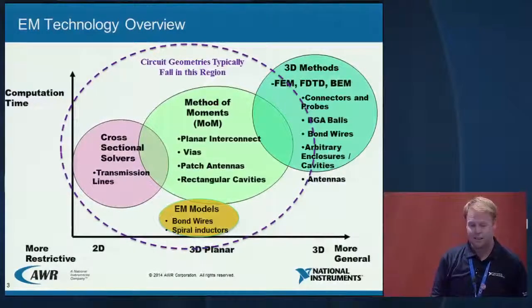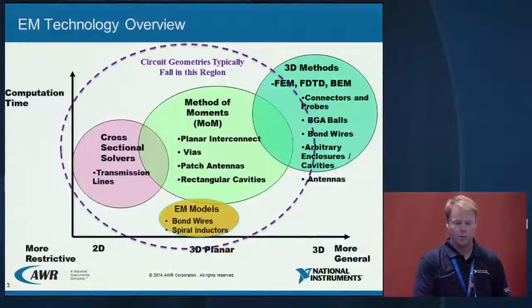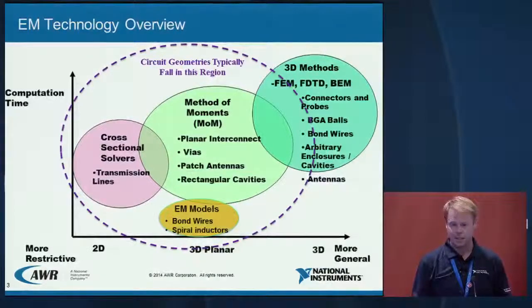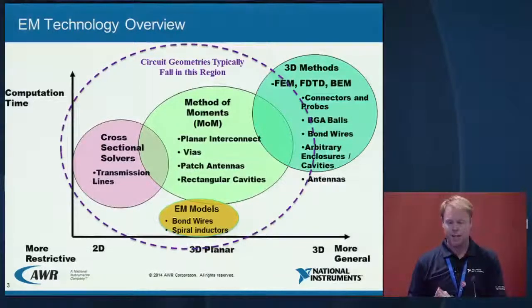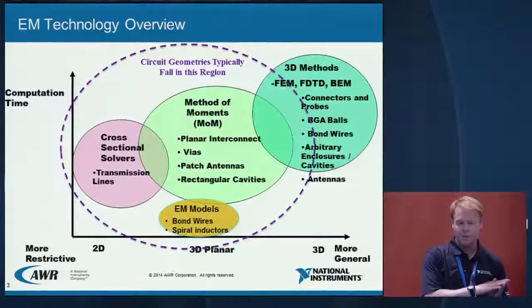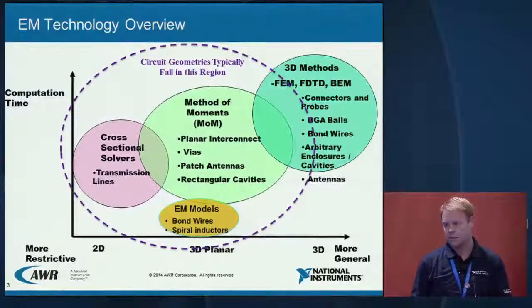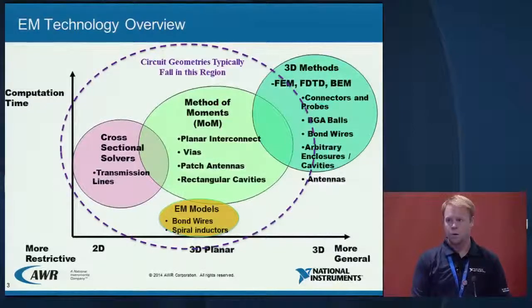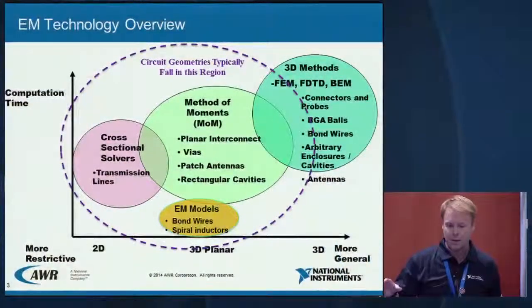Over towards the left side of the axis are the more basic simulation tools — the 2D cross-sectional solvers, for example transmission lines. Very basic stuff, been around for decades. As you move along the axis, you go towards 3D planar solvers. Some industry examples might be AWR's Axiom or Agilent's Momentum. These are planar solvers that do thick metal simulations and might simulate things like patch antennas or cavities.